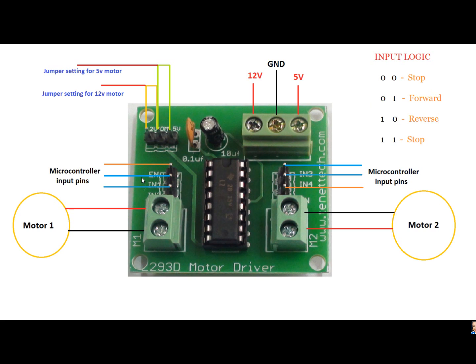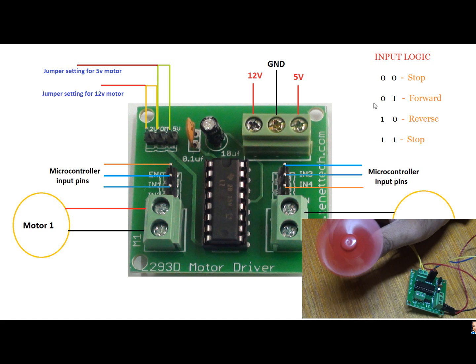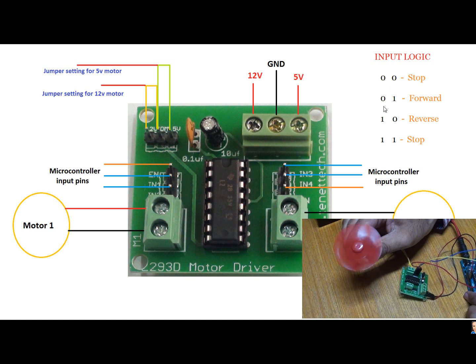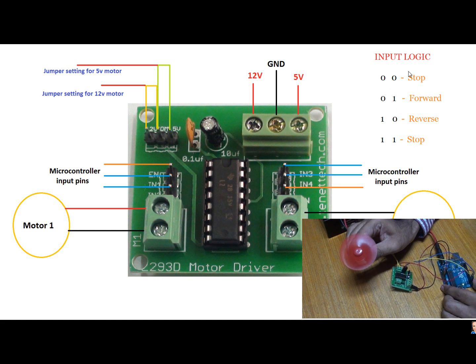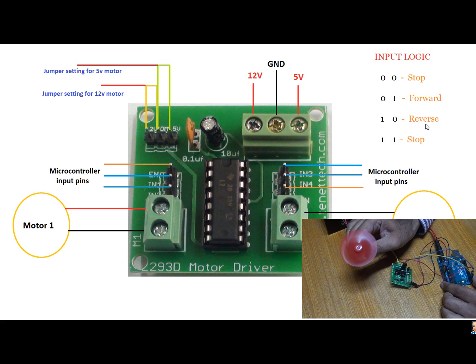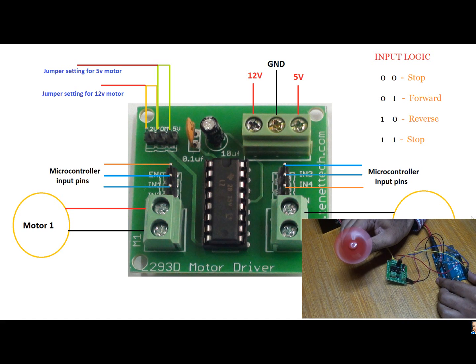The motor operations of two motors can be controlled by input logic at pins IN1, IN3, and IN4. Input logic 00 or 11 will stop the corresponding motor. Logic 01 and 10 will rotate it in clockwise and anti-clockwise directions respectively.